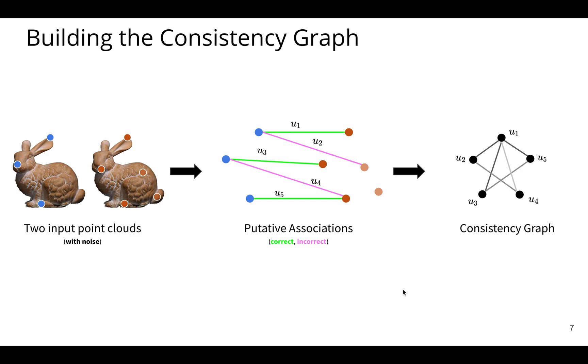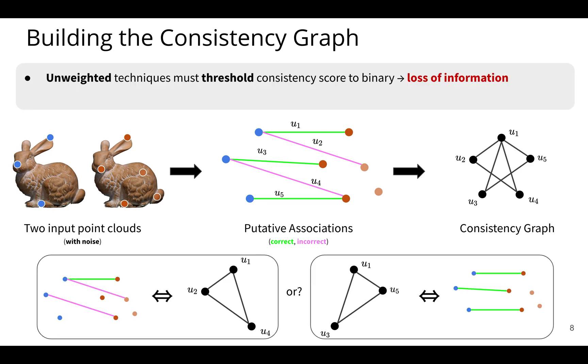So previously, I talked about weighted versus unweighted. And if we look at what the unweighted class of works do, is they take this graph and they threshold it to a binary or unweighted graph. And this leads to loss of information. And this shows an example here in the bottom of the screen, showing the challenge of losing this information, because now there are these two competing cliques, and it's not clear which clique to choose. Of course, the clique on the right corresponds to the actual inliers, but it's impossible to know just from looking at the cliques.